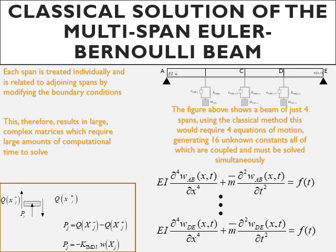This is due to the fact that the classical solution cannot be applied to multi-span beams. It requires us to consider each span as an individual beam with boundary conditions which relate the spans to one another depending on the type of support or attachment that connects them. This solution therefore results in large matrices which are very computationally demanding.